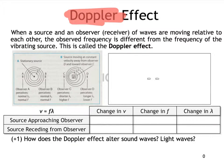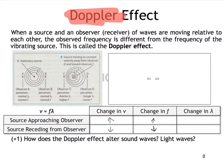If the source of the waves is approaching the observer, there will be an apparent shift in frequency making it seem larger than it actually is. If the source is receding, the observed frequency would be lower than it actually is. This also affects the speed of the wave — the speed is shifted slightly up for an approaching wave and slightly down for a receding wave. The wavelength is inverse to frequency, so you see an apparent decrease in wavelength for the approach and an apparent increase in wavelength for the recession.